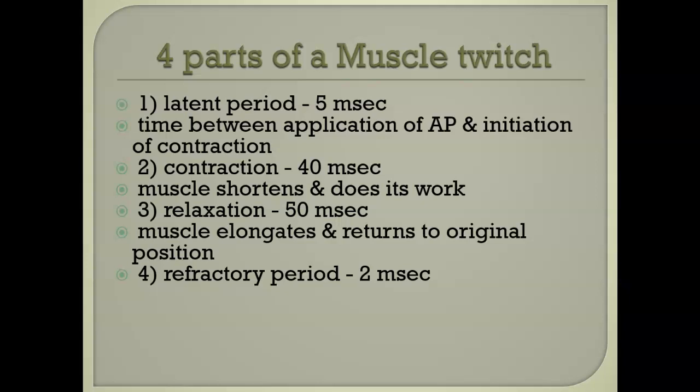Then the muscle actually contracts. When the action potential — AP stands for action potential — hits, the muscle actually does its work. That takes about 40 milliseconds. Then it stops. This is the relaxation period, and the muscle can elongate only if it's pulled back by an antagonistic muscle, but it returns in about 50 milliseconds.